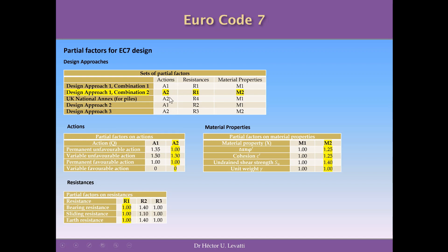For Design Approach 1 Combination 2, we need to use coefficient set A2 for actions — you can see the table here and A2 is the second column. For resistances, we use R1, which is the first column of the resistances table. For material properties, we need M2, which is the second column of the third table, to affect the material properties of our soils.